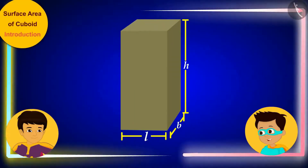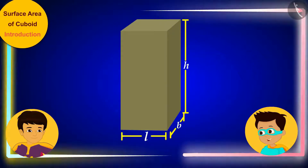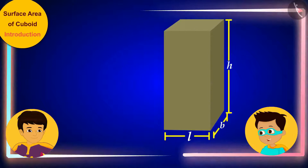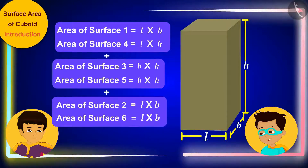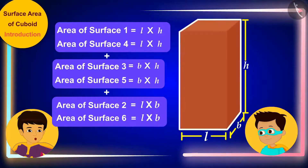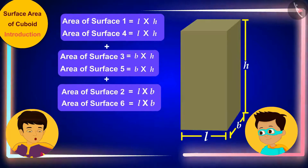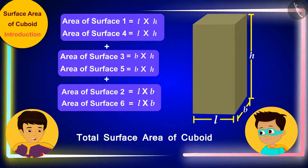Great! So we only have to add the areas of these six surfaces to find the paper needed to cover this cuboid box. And the sum of the areas of all the faces of any three-dimensional shape is called its total surface area.